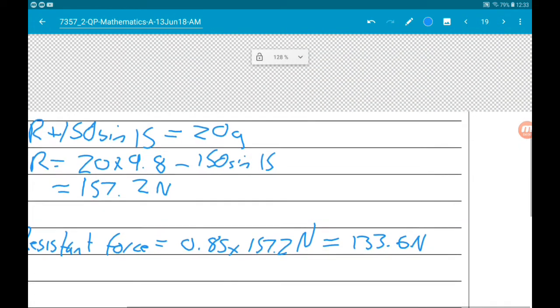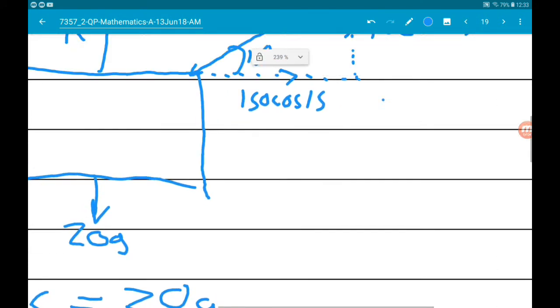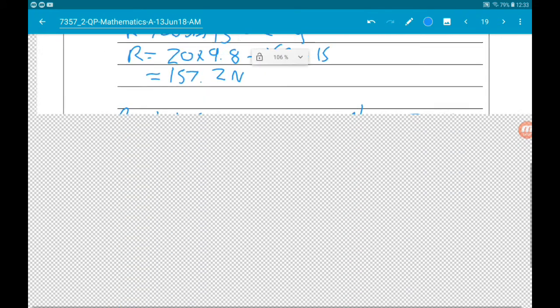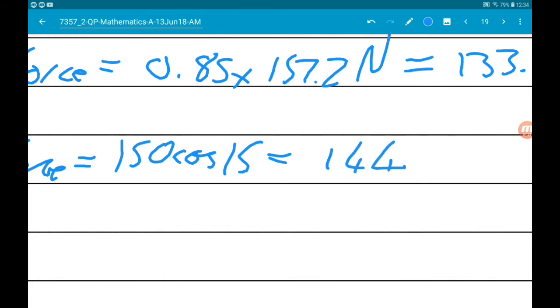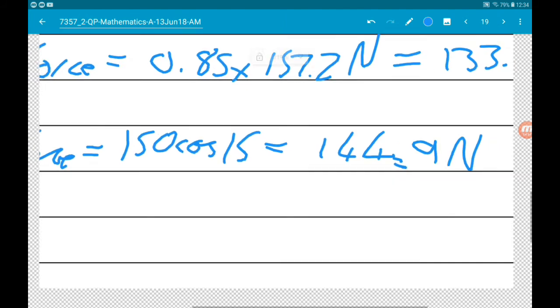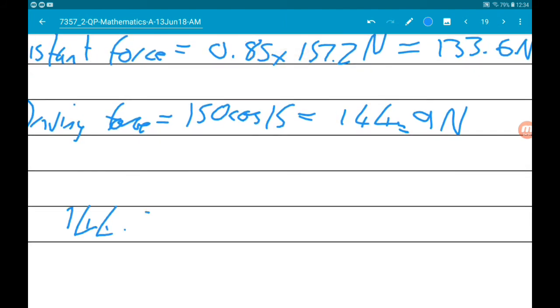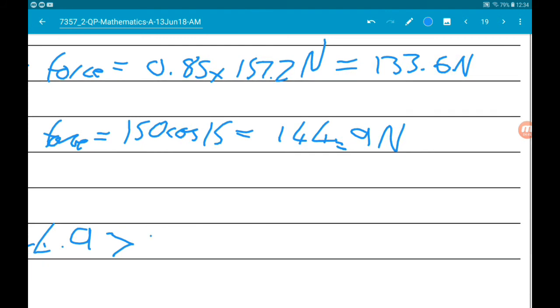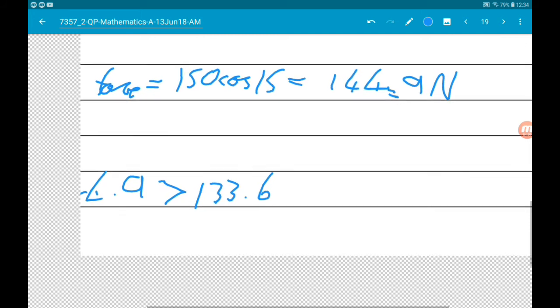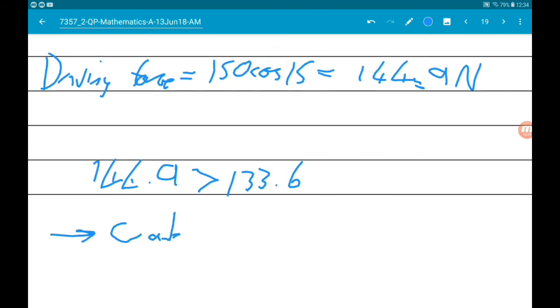Now, we now know the horizontal driving force as well. That is 150 cos 15. So the driving force is 150 cos 15, which gives us 144.9 newtons. Now, 144.9 is greater than 133.6, so the crate starts to move. Cool. Thank you.